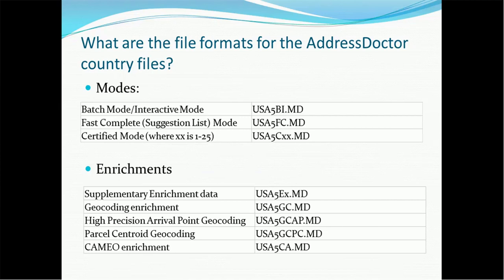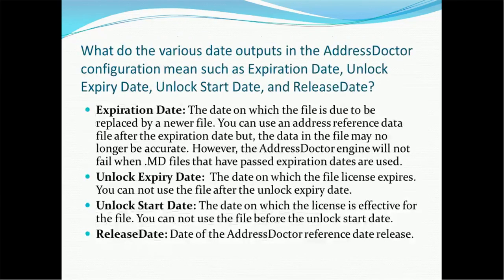The significance of knowing these file formats is that if you have a license for specific enrichment or particular files, you can verify whether you received the correct files. The next topic covers what the various date outputs in the Address Doctor configuration mean — such as expiration date, unlock expiry date, unlock start date, and release date. Whenever you receive Address Doctor, you might encounter these dates.